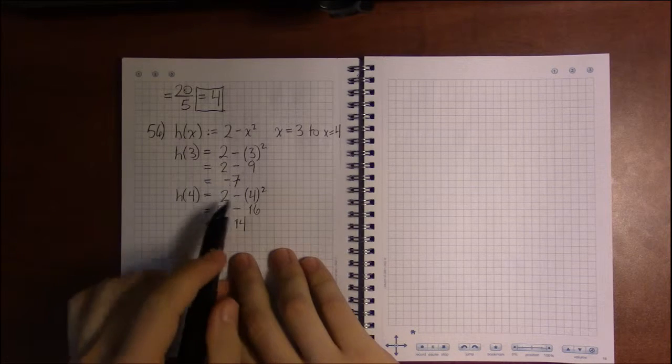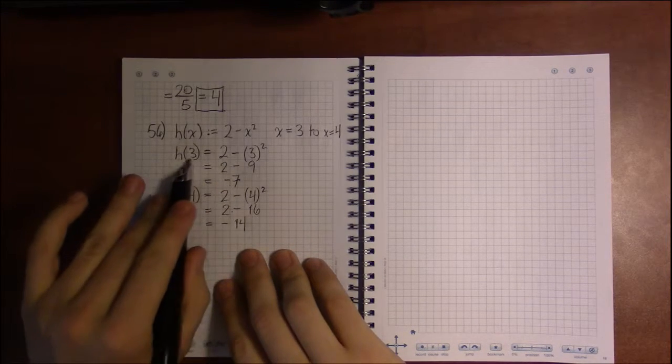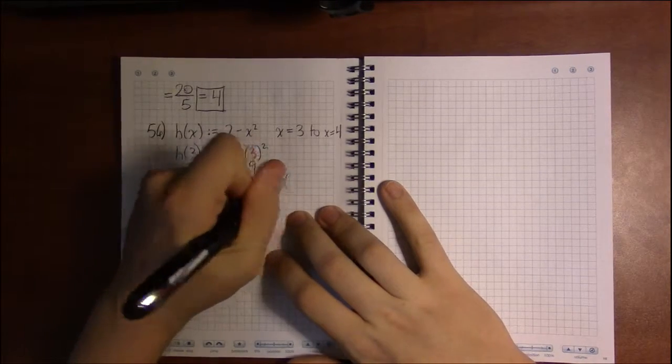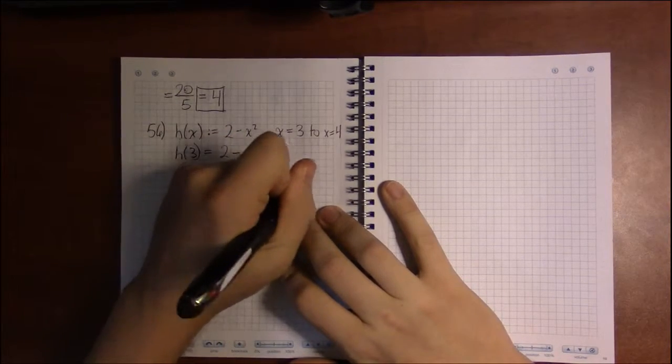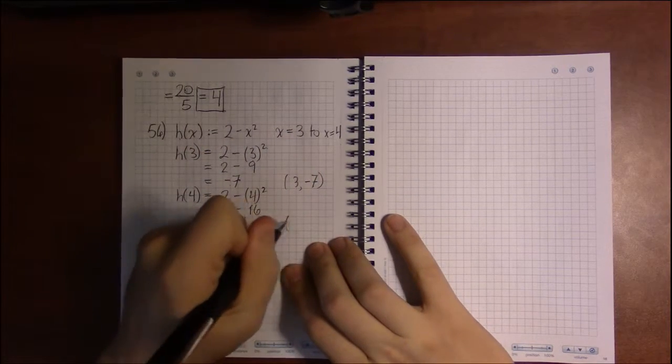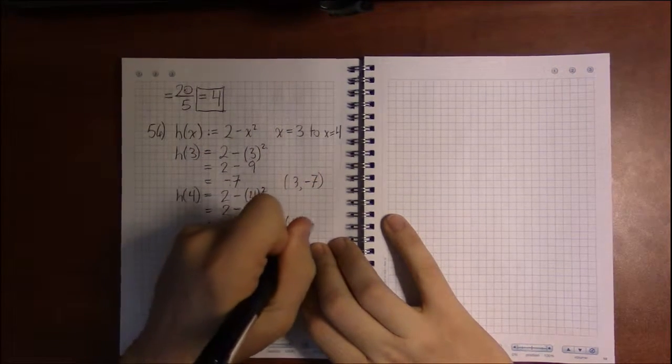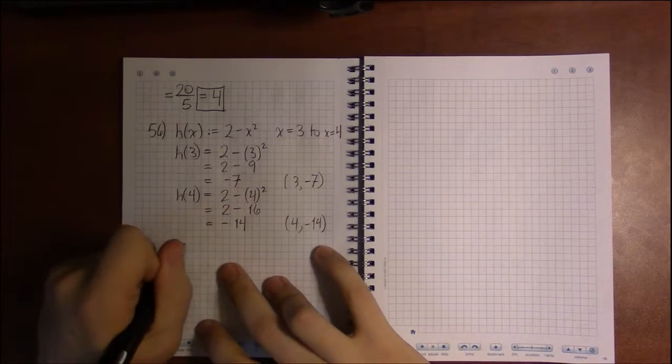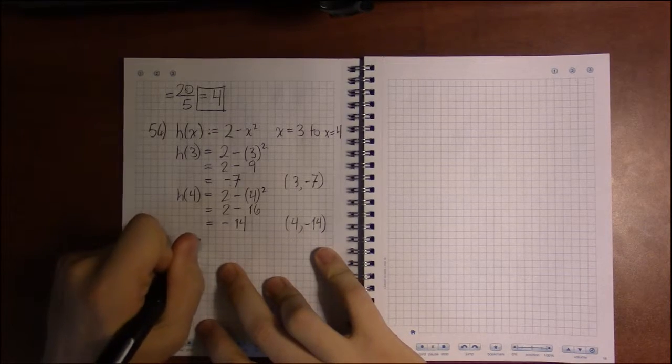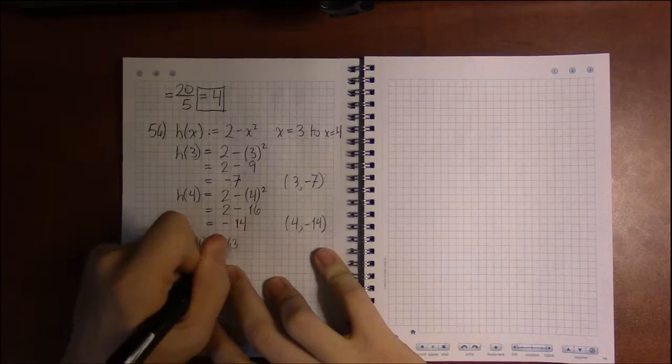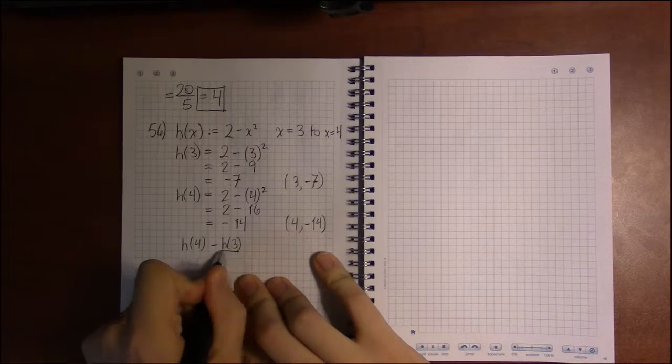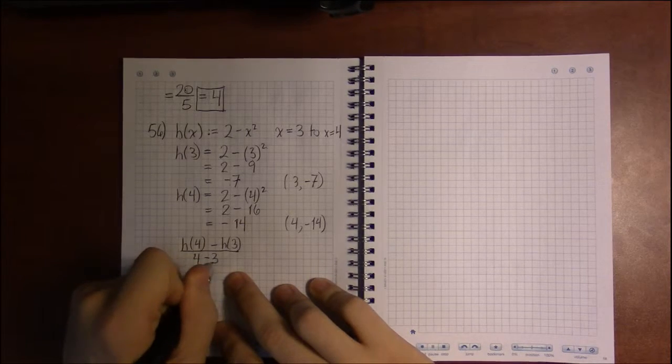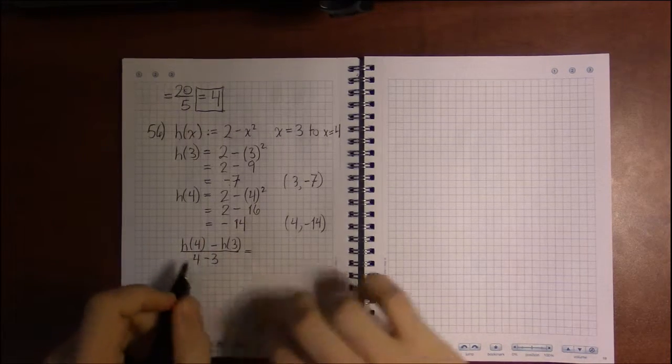So what we're looking for is the slope between the point (3, -7) and the point (4, -14). So that slope is going to be h(4) - h(3) divided by the difference of the x values, 4 - 3. And this is just a fancy way of writing...